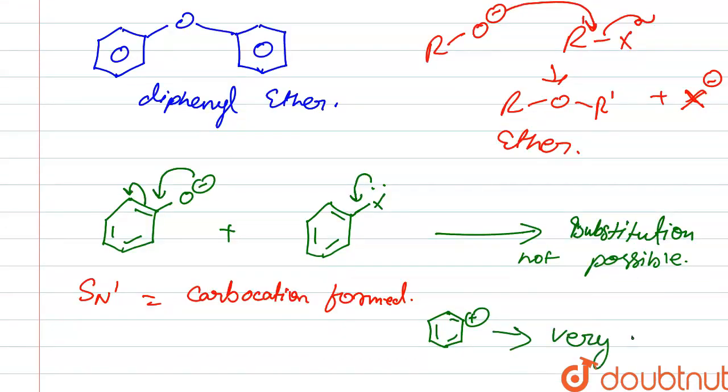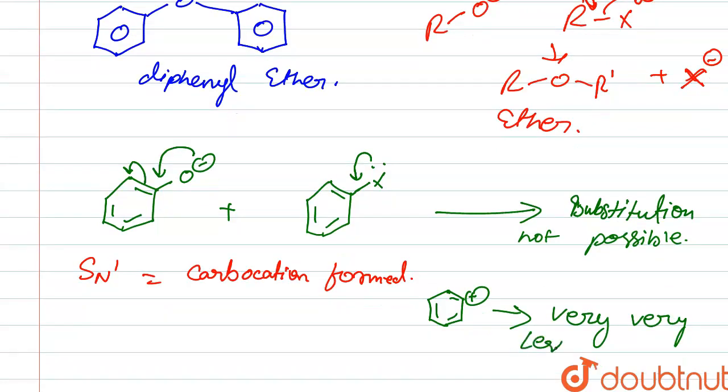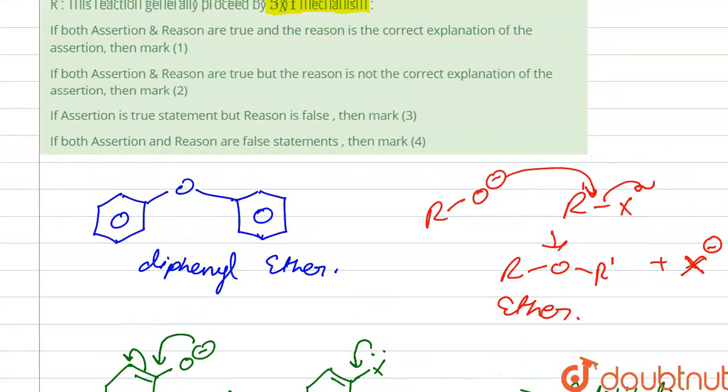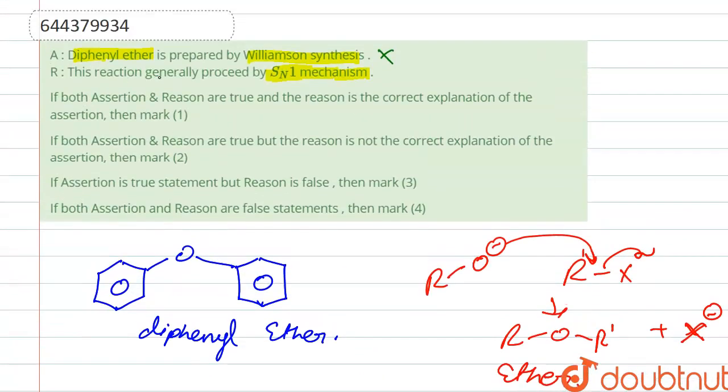Very, very less stable. So it is also not possible. So here we can say that this reaction generally proceeds by SN1 mechanism, so it is also wrong.